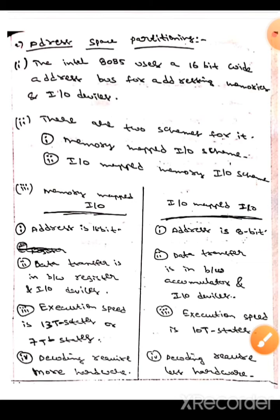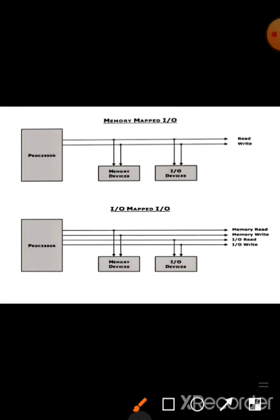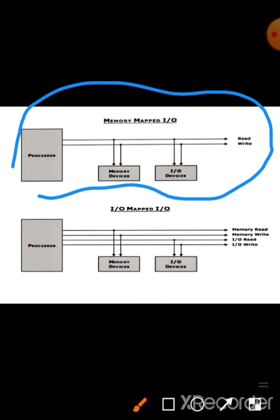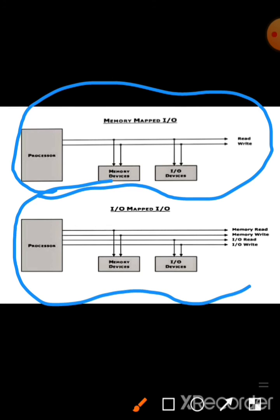This is all about address space partitioning. Here this is the diagram of memory-mapped I/O, whereas this is the diagram of I/O-mapped I/O.